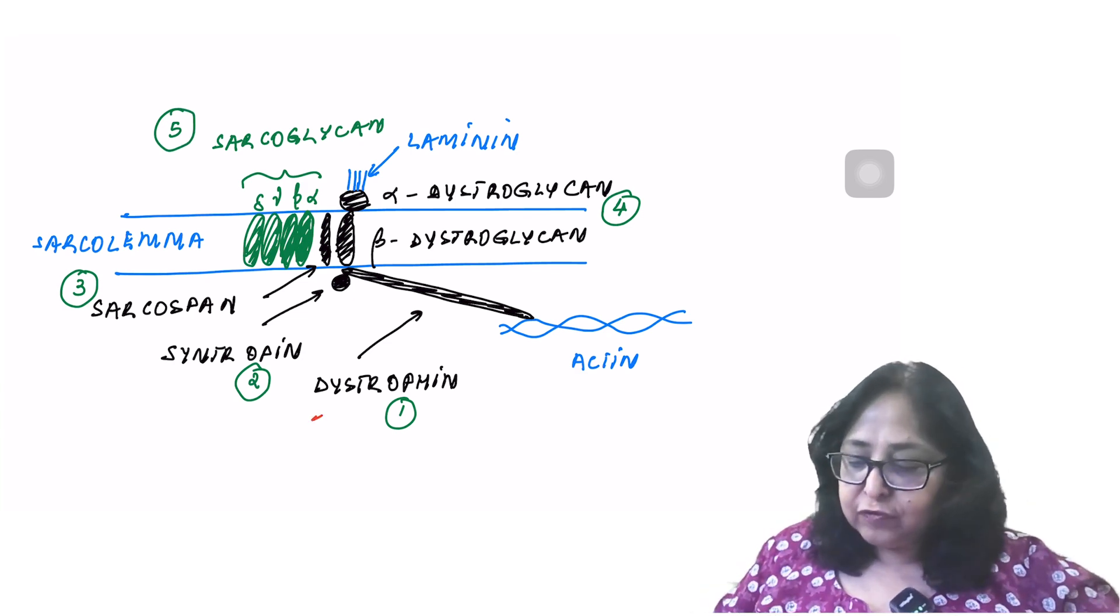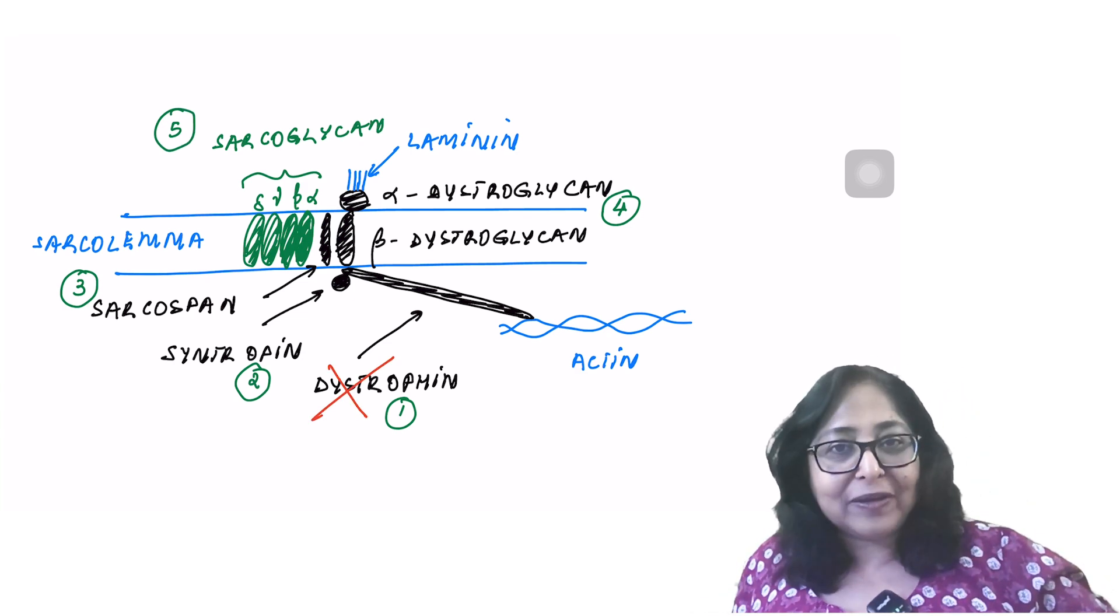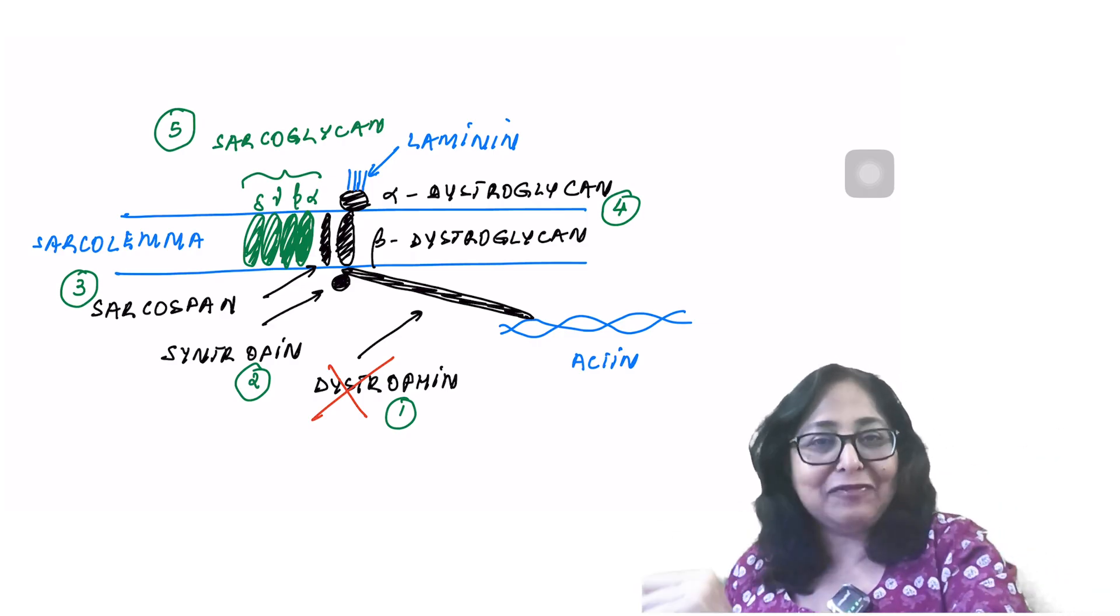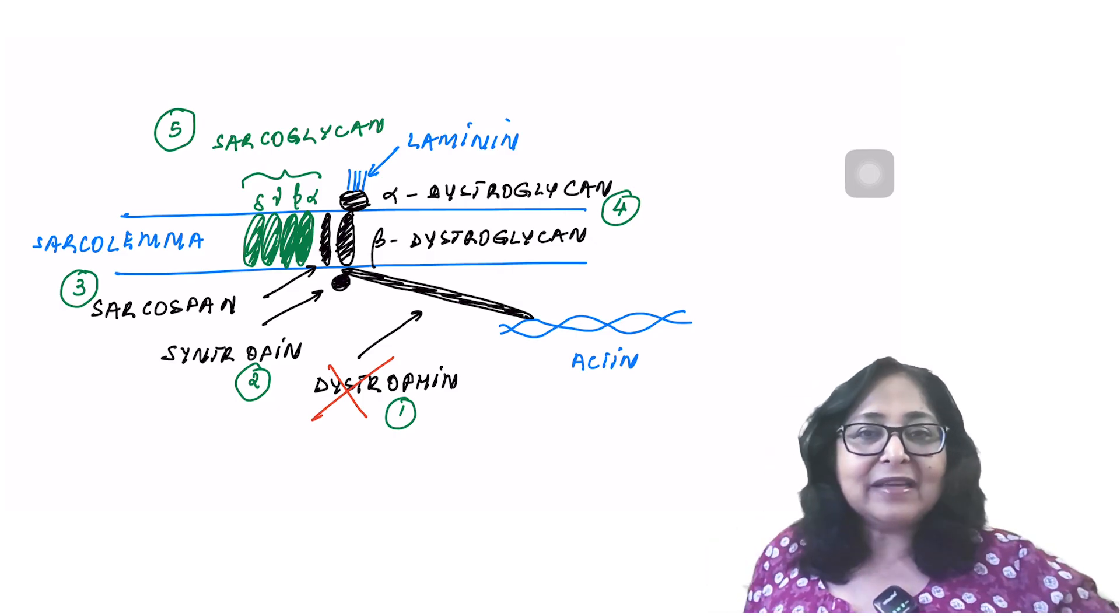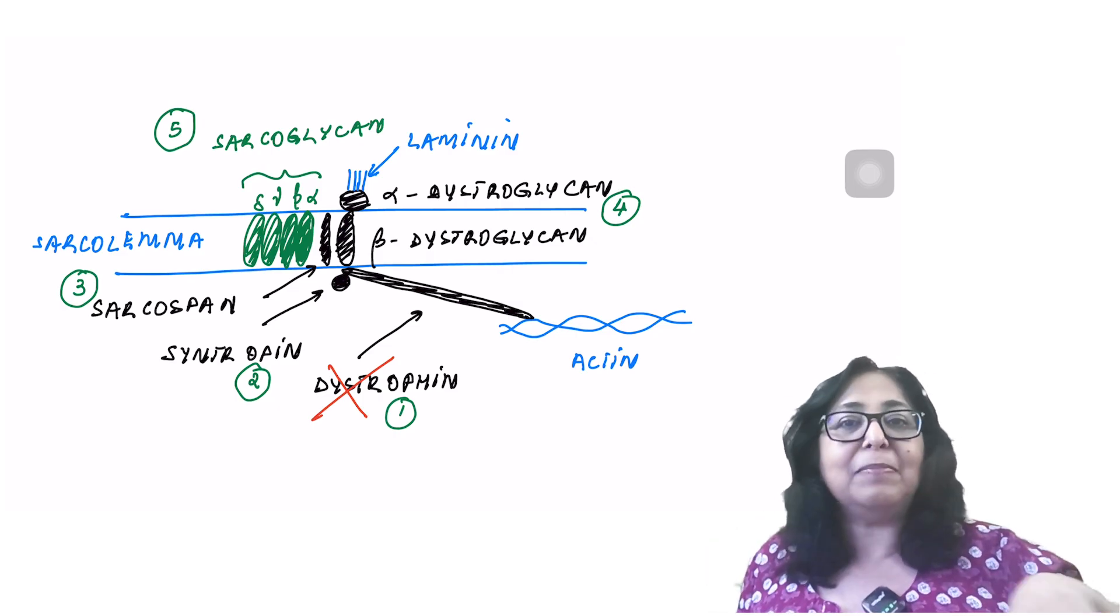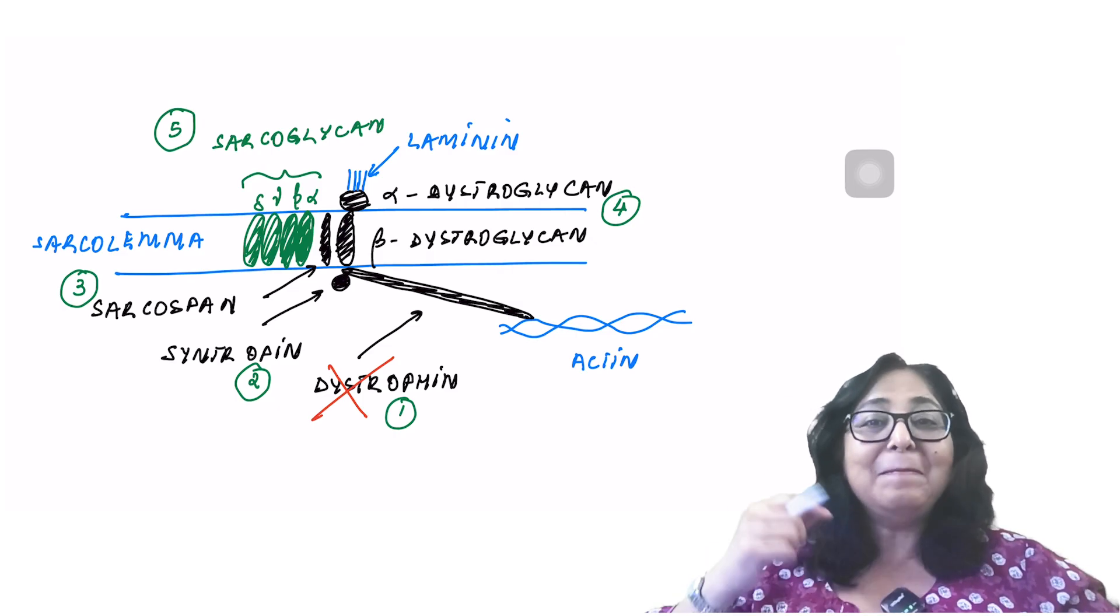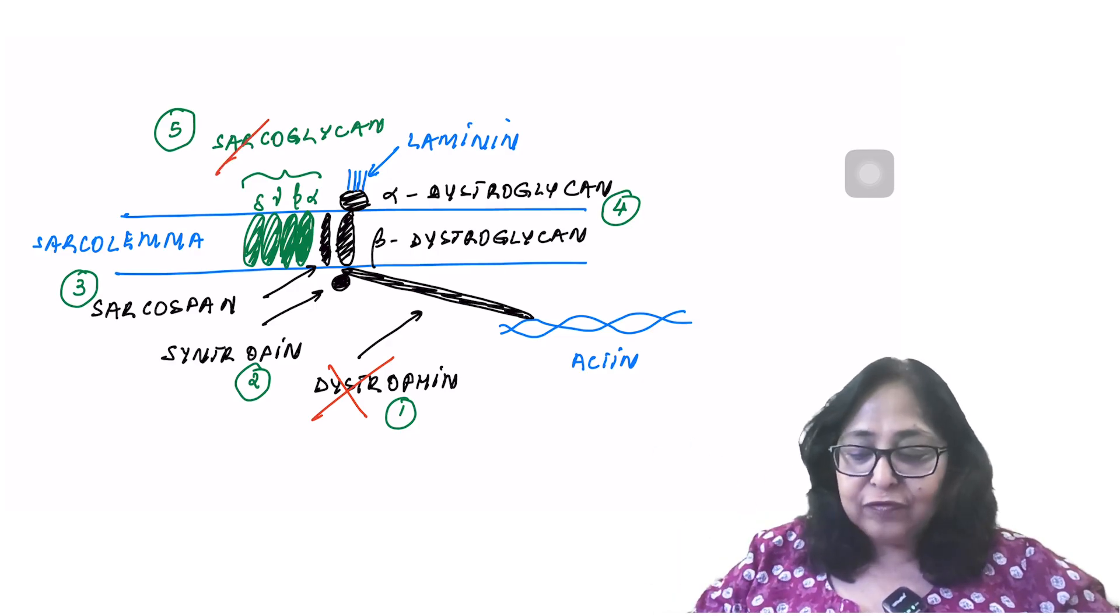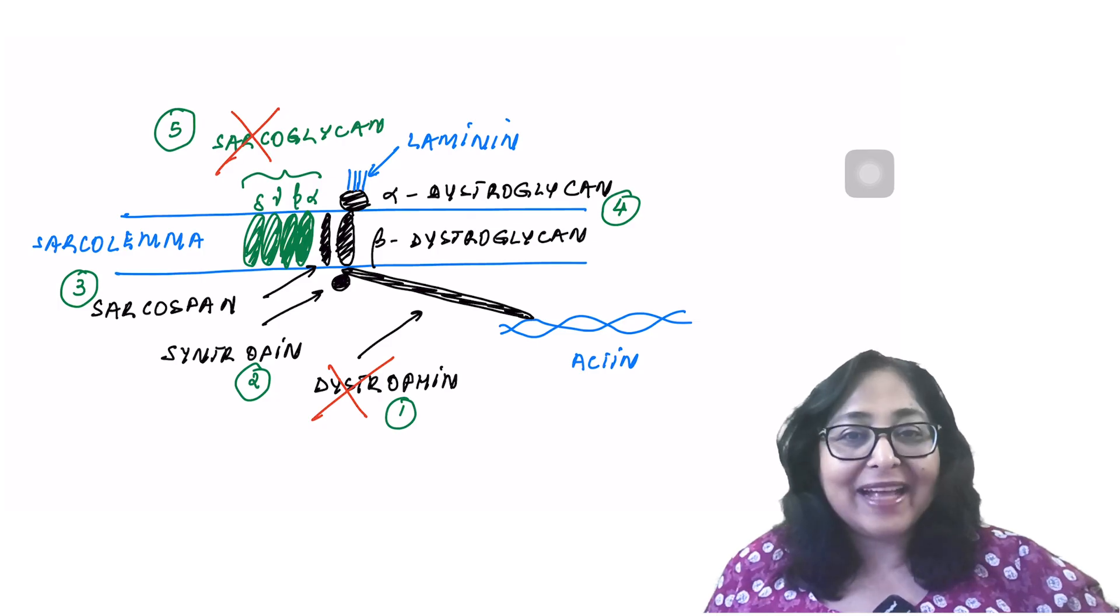Absence of dystrophin: Duchenne's muscular dystrophin. Remember, in Duchenne's dystrophin is deficient. Becker's muscular dystrophy, dystrophin is present but reduced. Remember, Becker's is better. Limb girdle dystrophy is a mutation of sarcoglycan.